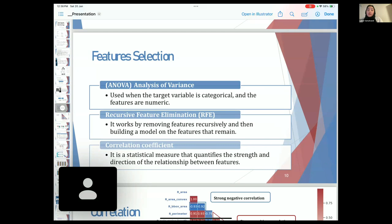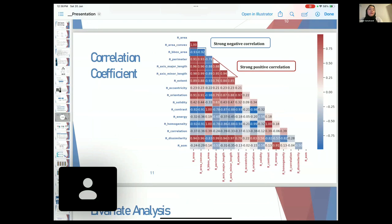A correlation coefficient is a statistical measure that quantifies the strength and direction of the relationship between features. Here's a graph illustrating the correlation coefficient with strong negative correlation in blue and strong positive in red.